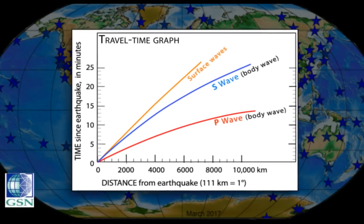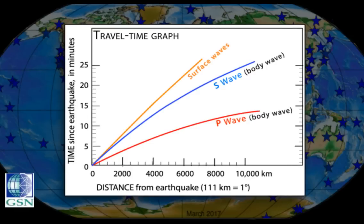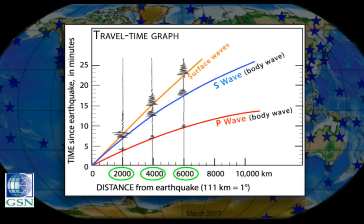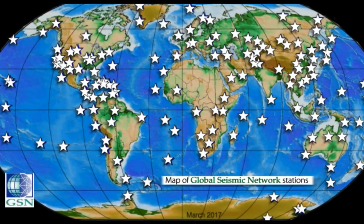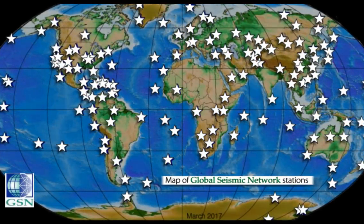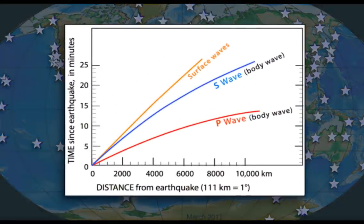A travel time curve is a time versus distance graph of the time that it takes for seismic waves to travel from the hypocenter of an earthquake or other ground-shaking event to seismograph stations at varying distances away. They're constructed by analyzing thousands of earthquakes from hundreds of seismograph stations around the world, and they're used by seismologists to quickly locate earthquakes. But how are they determined?